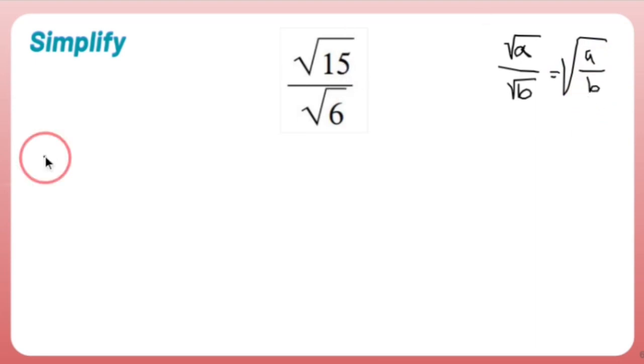Why am I going to do that? Because I can write this out as the square root of 15 over 6. And I know that 15 over 6 simplifies to 5 over 2. I can divide the top and the bottom by 3. Great.